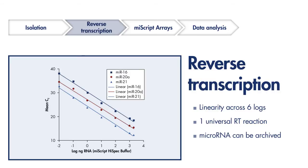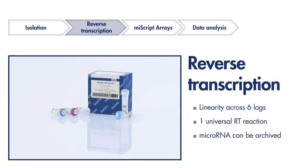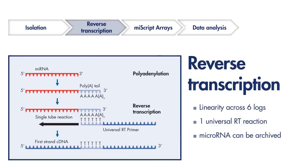Step 2 involves reverse transcription of microRNA with the miScript RT kit, which converts all of the microRNA into cDNA in an unbiased manner. With linearity across 6 logs of input RNA, microRNAs are efficiently converted into cDNA regardless of their expression levels. Relying on the power of a universal reverse transcription reaction, a single cDNA preparation is sufficient to profile the entire miRNome or multiple pathway-specific miScript PCR arrays.